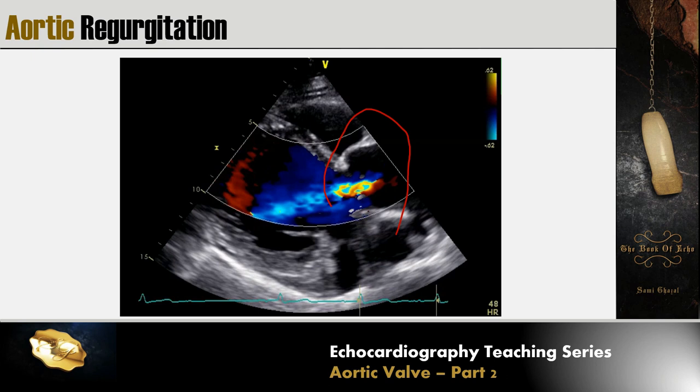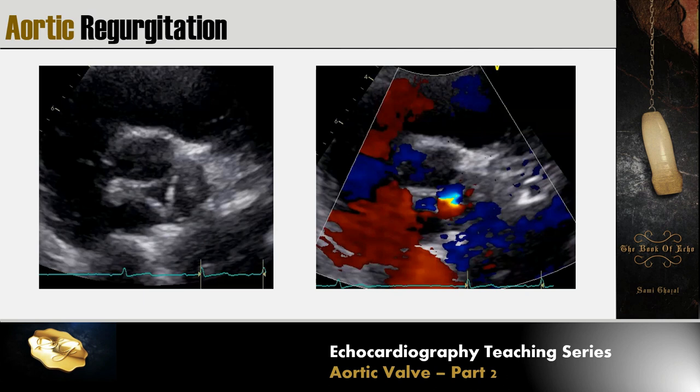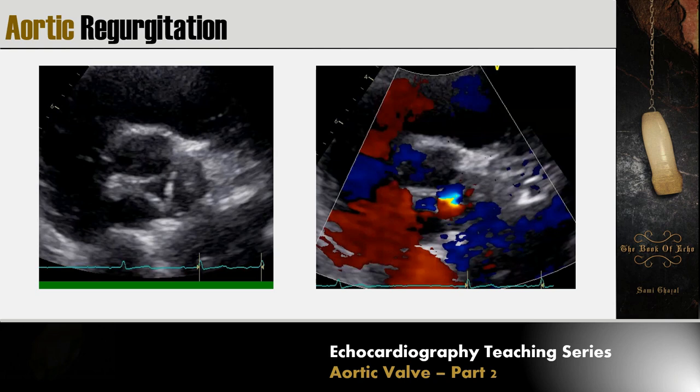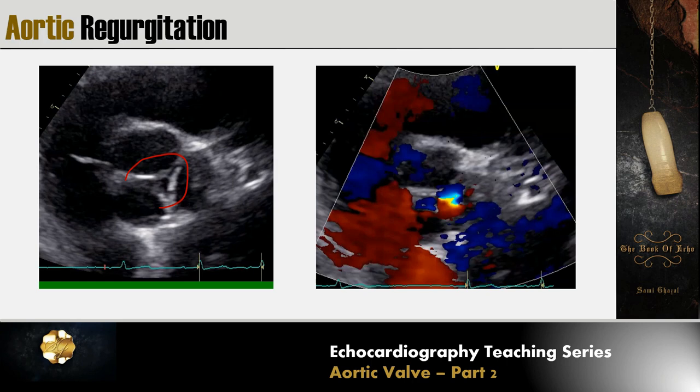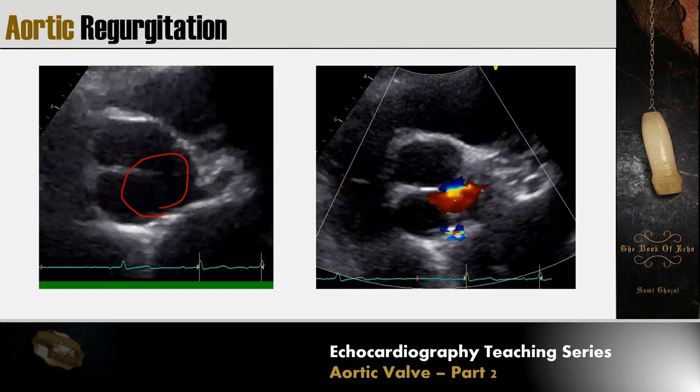In the case of aortic root dilatation, if we look at the aortic valve in short axis, we will see a central coaptation defect. When we run the image, we can see the aortic regurgitation jet coming from that defect.